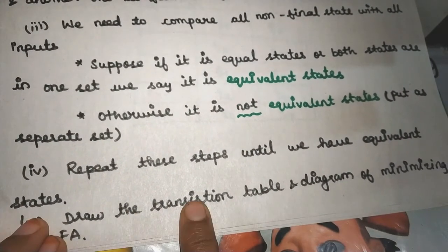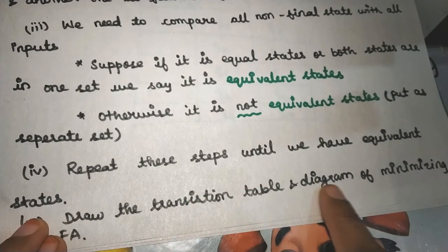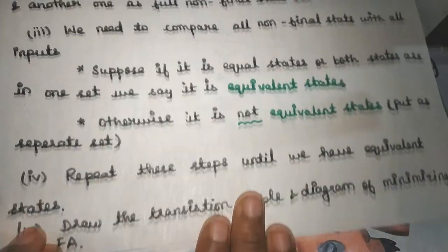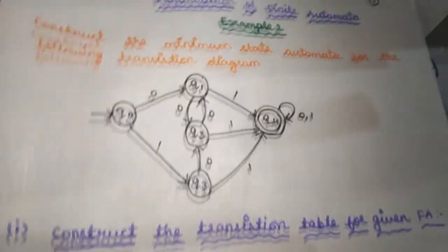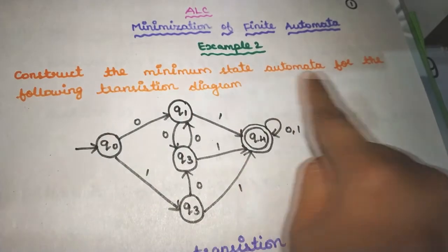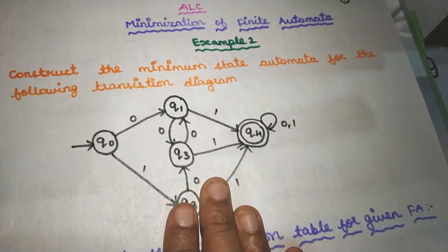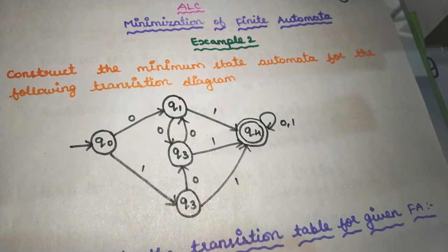Last time, you had the transition table and the transition diagram. This is the minimization of finite automata — there are many problems we will discuss. We need to construct the minimal state of this system. Notice that you have a transition diagram, and we will change this transition diagram to do the minimization.